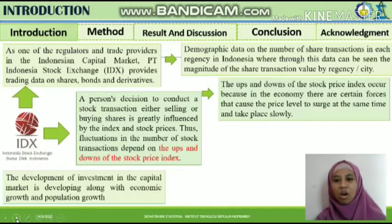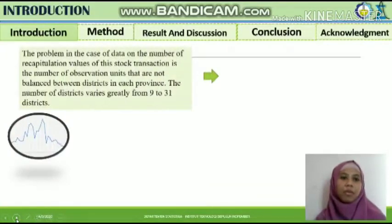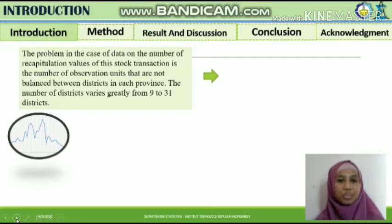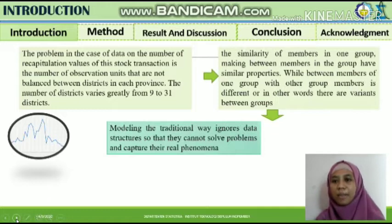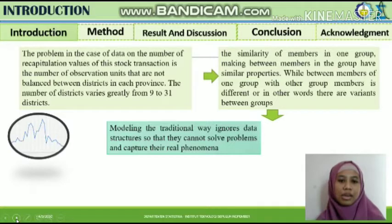Fluctuations in the number of stock transactions depend on the up and down of the stock price index. The stock price index fluctuates because certain factors cause the price level to surge at the same time and take place slowly. These factors come from the economy, environment, population, and others. The problem with the data on the number of stock transaction values is the number of observation units that are not balanced between districts in each province, varying greatly from 9 to 31 districts.